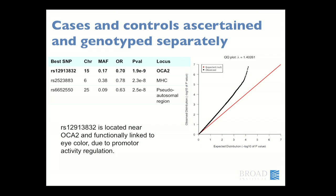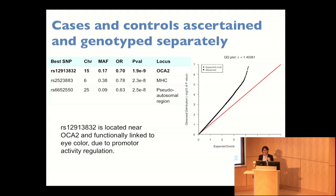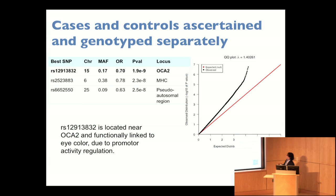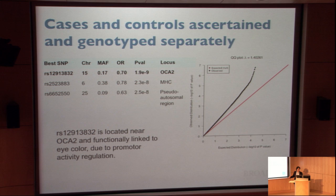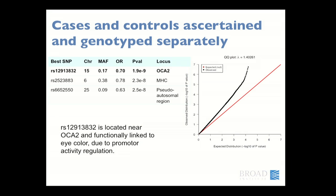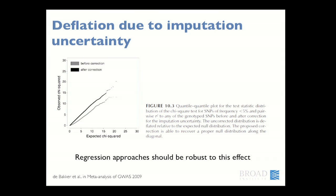As a case in point: when we took a case sample and an independently ascertained and genotyped control sample from the same country, we found a QQ plot with lambda of 1.4, and the top signal at genome-wide significance (2×10⁻⁹) was a SNP in the HERC2/OCA2 region varying for eye color — a classic demonstration of population stratification.